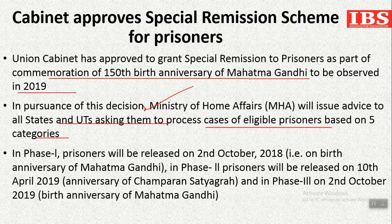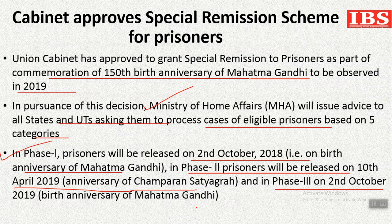The remission under this decision is given in 3 phases. In the 1st phase, prisoners will be released on 2nd October 2018, i.e., the 149th birth anniversary of Gandhiji. The 2nd phase will be released on 10th April 2019, i.e., the anniversary of Champaran Satyagraha. And the 3rd phase will be on 2nd October 2019, i.e., the 150th birth anniversary of Mahatma Gandhi.